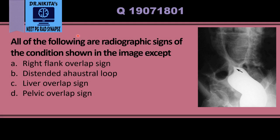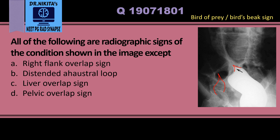All of the following conditions are radiographic signs of the condition shown in the image except — so we first need to identify the image. This is a barium enema where we see the contrast coming from the rectum into the colon, and suddenly in this region there is a pointed, abrupt cutoff to the contrast. This is the bird's beak appearance or bird of prey sign, which is seen in sigmoid volvulus. We can see this air-filled dilated bowel loop — this is the site of the volvulus, beyond which the contrast cannot go, giving the bird's beak sign. This is also the coffee bean sign of sigmoid volvulus.